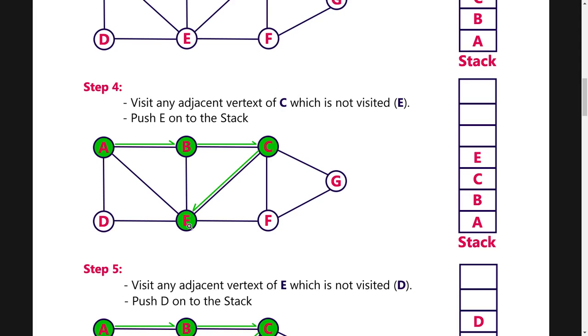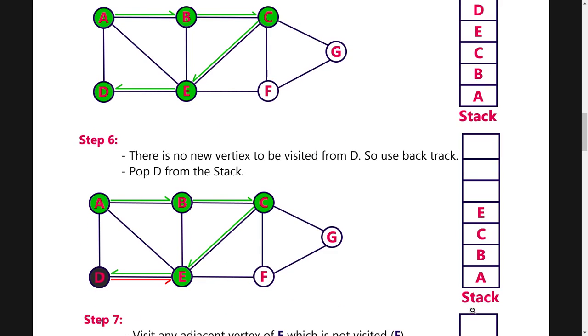Next, E is having D and F, so I am going for D. D to be pushed into the stack. Once you push D, then there is no adjacent unvisited node for D, so we have to do the backtracking method. At the same time in the stack, we have to do the pop operation. So I am just doing the pop operation of D.